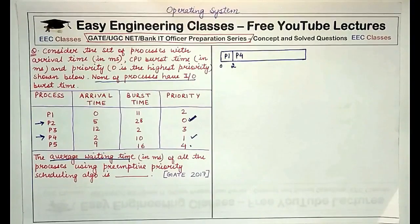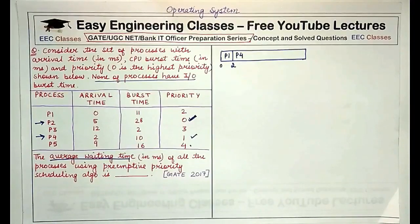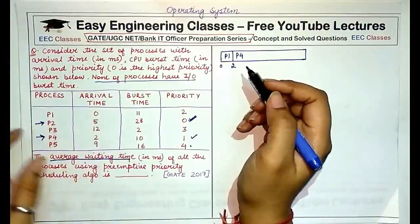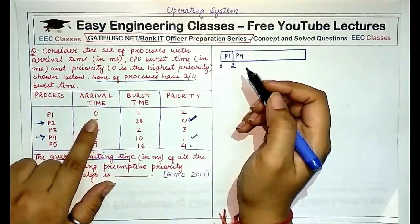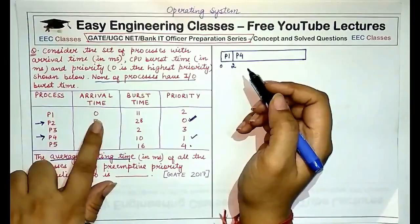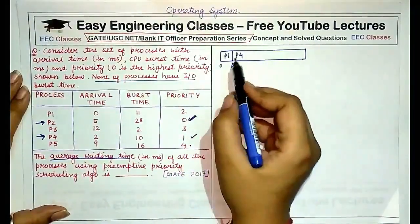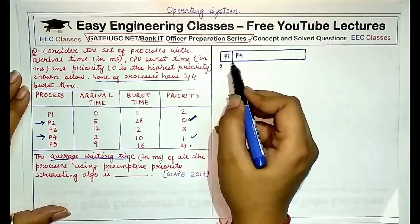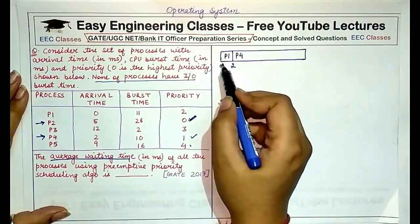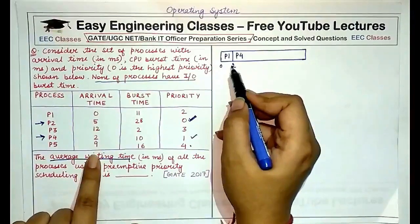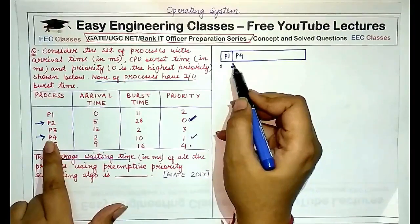To find the average waiting time, you first have to draw a Gantt chart. A Gantt chart shows how processes will be executed as they arrive according to their priorities. Starting from arrival time zero, since at time zero there is only one process P1 available, with priority two, we start executing P1 at point zero.